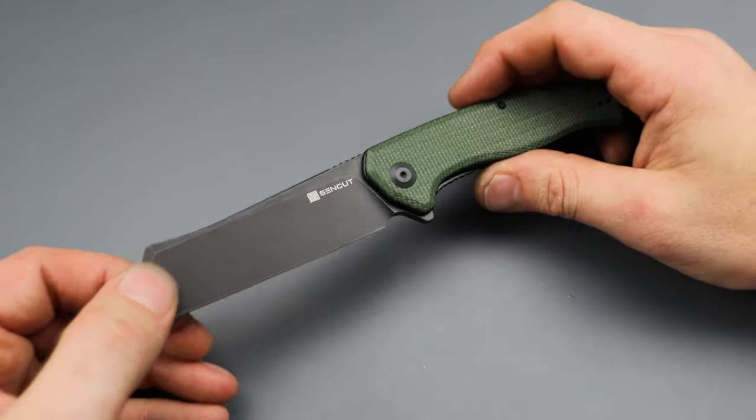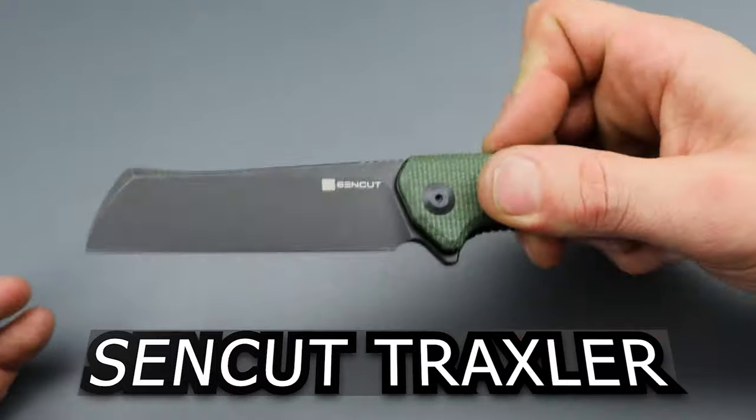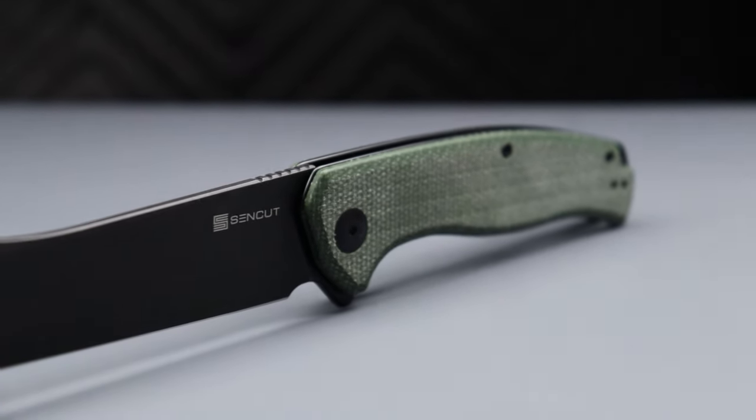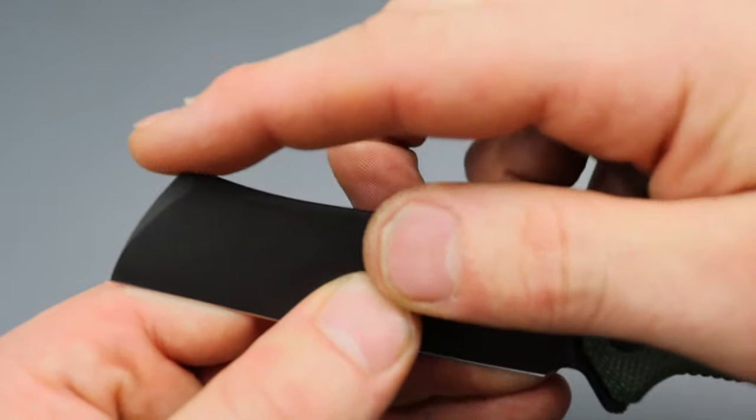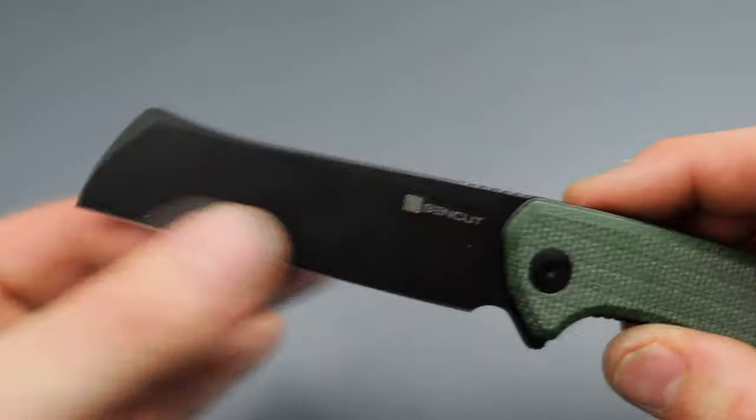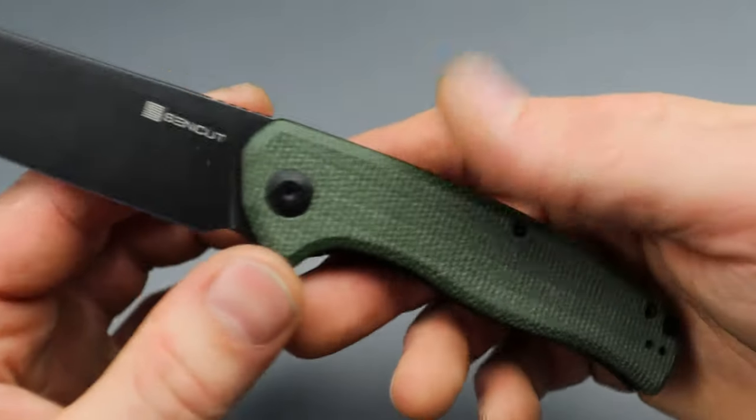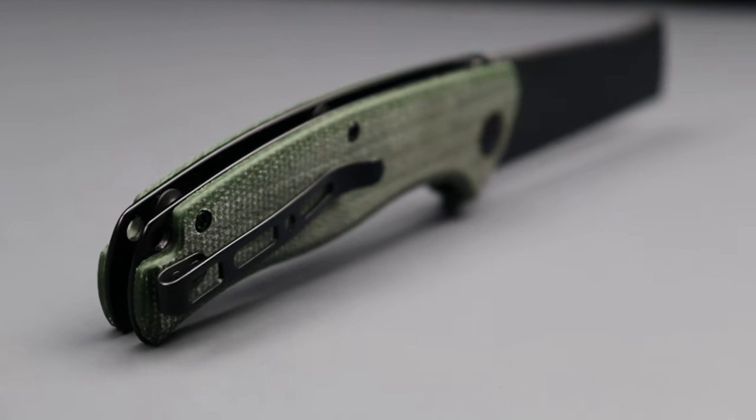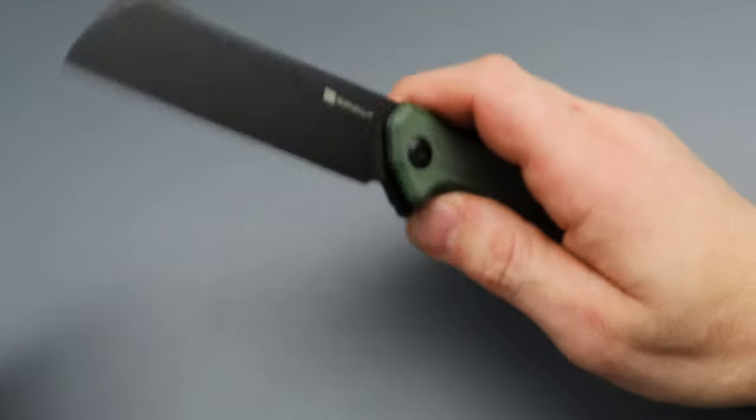The next one is the Sencut Traxler. Very unique. It does have a sheep's foot blade, but if you look, the sheep's foot goes down and then it ramps up right here at the nose. Very slicey. It is a flat ground blade. This one has green micarta scales, but it does come in different options. Reversible deep carry clip, all the way around. Good access to the liner.